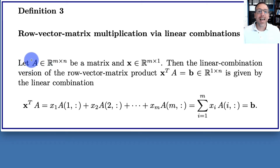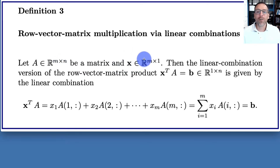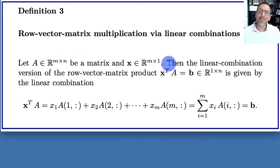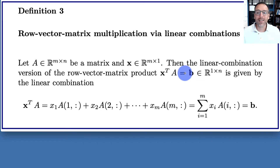We say let A be an element of R^(m×n), so it's an m-row, n-column matrix, and then we have a vector x which is an element of R^(m×1) — a column vector where the number of rows of x matches the number of rows of A. From our definition, x^T times A gives output vector b, which will be a 1-by-n row vector.